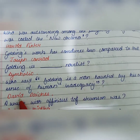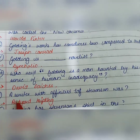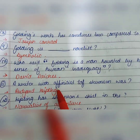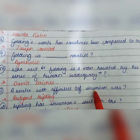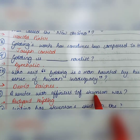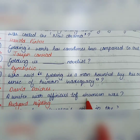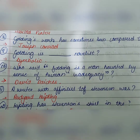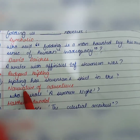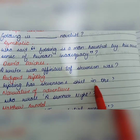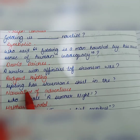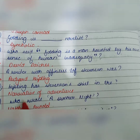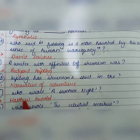A writer with affinities to Stevenson — meaning a writer who seems to share a good relationship or similarities with Stevenson — that is Rudyard Kipling. And Kipling has Stevenson's skills in the narrative of adventure.